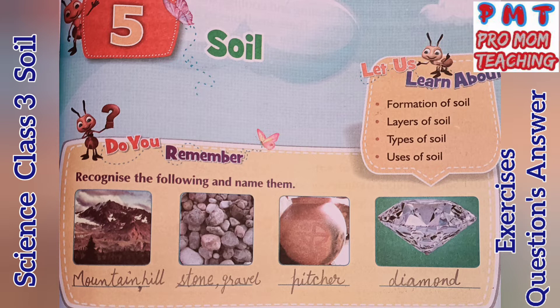Recognize the following and name them. The first one is mountain or hill. Next is stone or gravel. Next is pitcher or pot. The last one is diamond, which is a well-shaped stone.